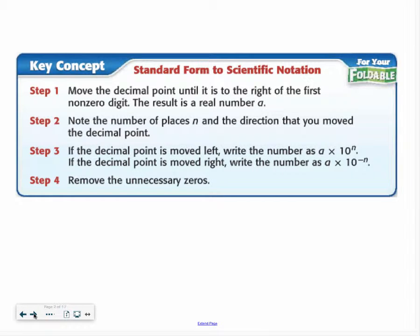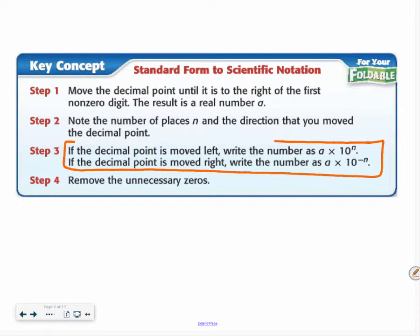The first key concept is going from standard form to scientific notation — this is something you may want to take a screenshot of. I think you had a pretty good understanding of this last year, but this third step is where most of you end up mixing up. If you are moving the decimal point to the left, you write it with a positive exponent. If it moves right, you write it with a negative exponent. So: left positive, right negative.